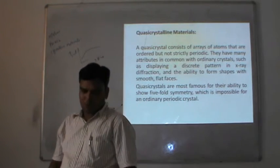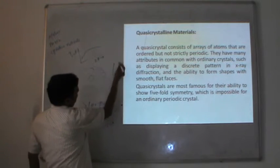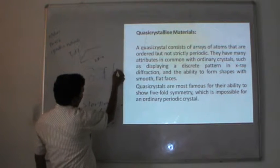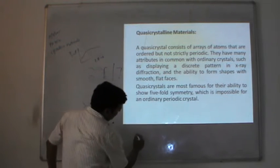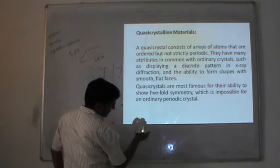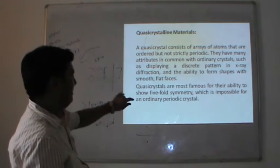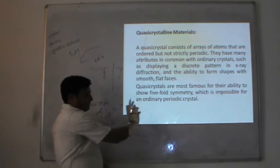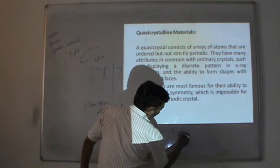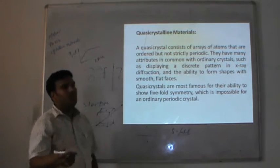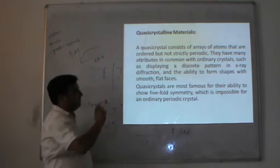In the case of crystalline materials, symmetry is important — for example, reflection symmetry. In a normal crystalline structure, five-fold symmetry is not possible. This is a well-known concept: for ordinary crystalline material, five-fold symmetry is not possible, but in the case of quasi-crystalline material, five-fold symmetry is possible.